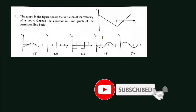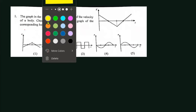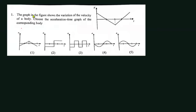We are back with another video based on graphs. This would be tutorial discussion three — we have done two tutorials based on graphs, specifically on SP, VT. This one will focus on AT graphs. The question says: the graph in the figure shows the variation of velocity of a body. Choose the acceleration-time graph of the corresponding body.